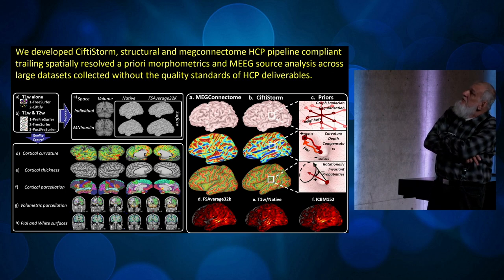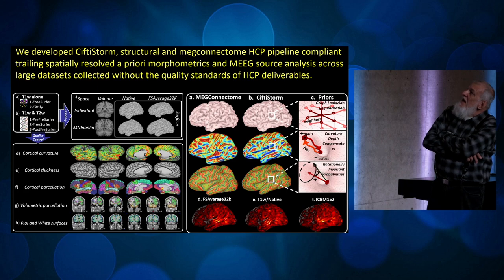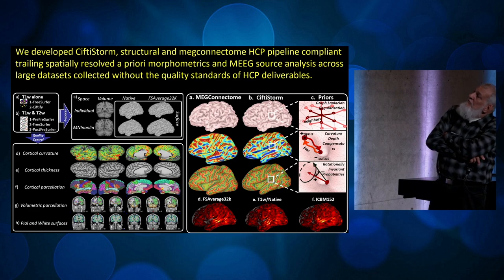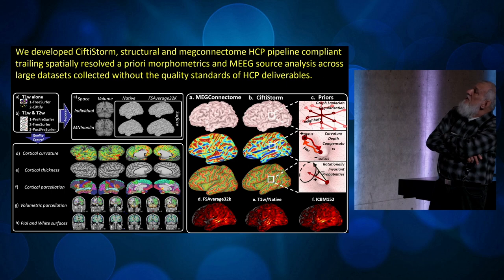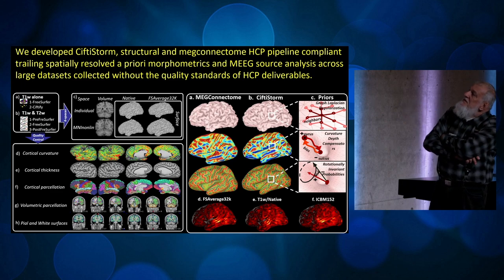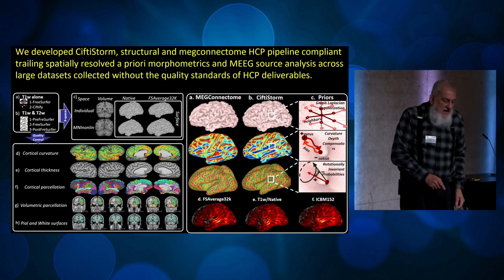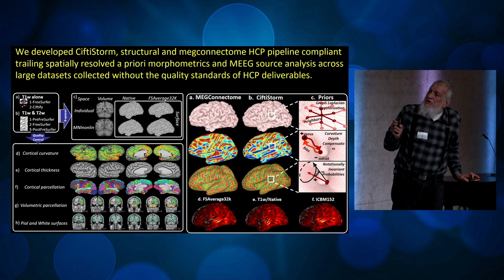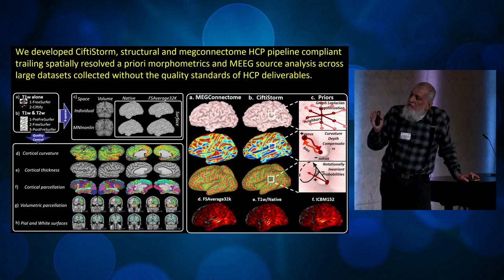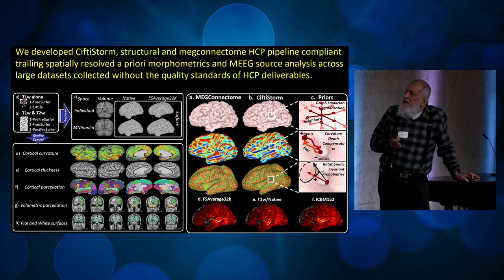We're using a series of priors to do EEG and MEG source localization, with several improvements with respect to the MEG connectome. The software we've developed is called SIFTI-STORM — STORM is a nod to Brainstorm, which has been essential, and SIFTI is because we're adhering to the HCP standard, with SIFTI files as output especially for connectivity. This is a pipeline dedicated to EEG and MEG with an emphasis on EEG source connectivity.